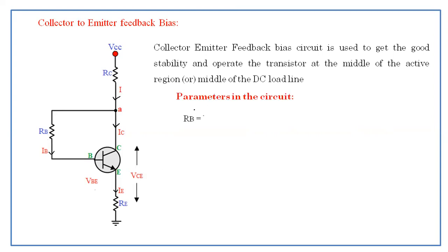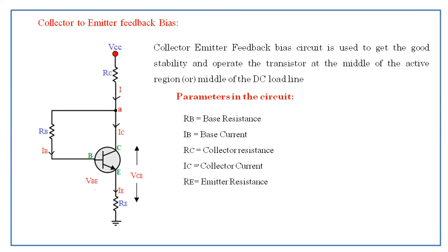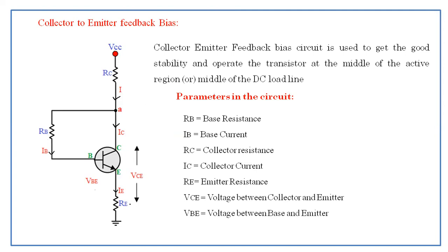Now we'll see the parameters: RB is the base resistance — the resistor connected to the base terminal. IB is the base current passing through the base terminal. RC is the collector resistance and IC is the collector current. RE is the emitter resistance. VCE is the voltage between collector and emitter. VBE is the voltage between base and emitter. VCC is the biasing voltage.